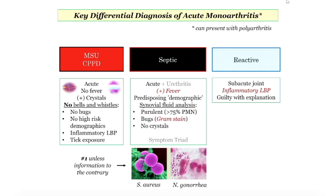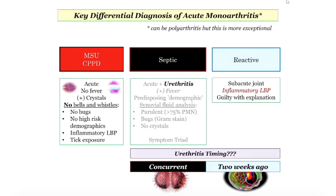When diagnosing crystal-induced disease, notice what's not there: it is acute, there is no fever, no bugs on Gram stain, no high-risk demographics, no inflammatory back pain, no tick exposures. It's acute, a hot joint, with inflammatory synovial fluid. Septic arthritis: they almost always give you a fever and a predisposing demographic. Synovial fluid is purulent — greater than 75% PMNs. Your default bug is Staph aureus, unless they give you a reason to choose Neisseria gonorrhea. Both septic and reactive will have urethritis — it's timing that matters.